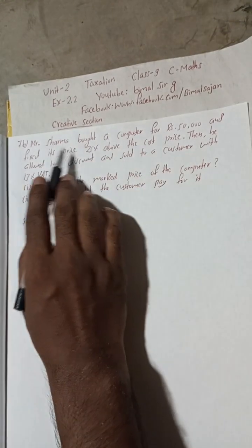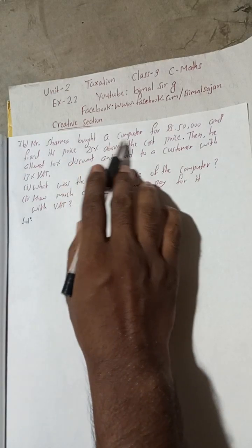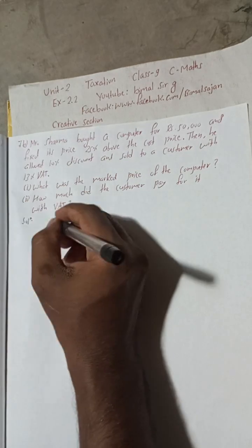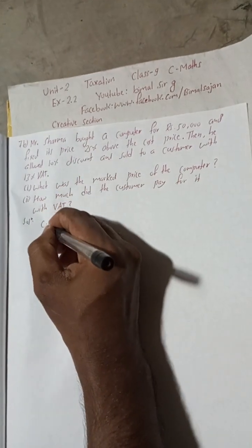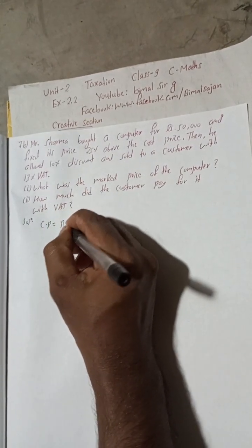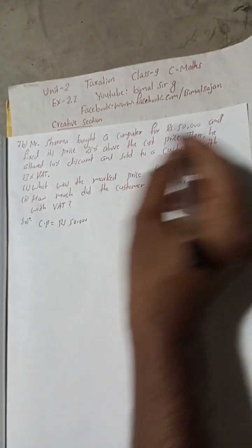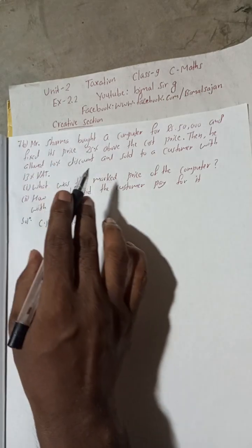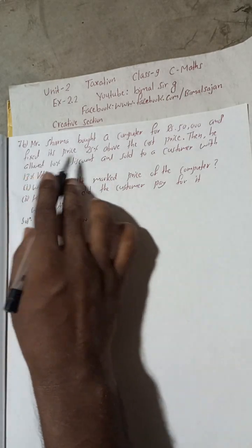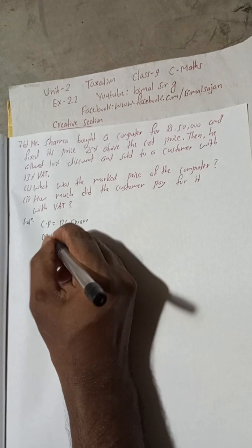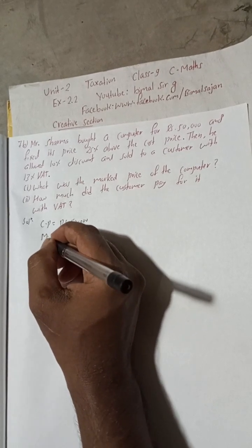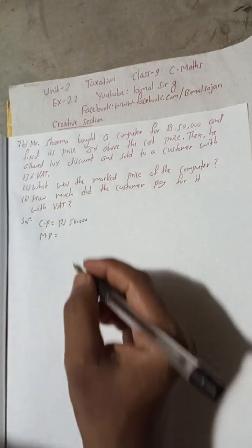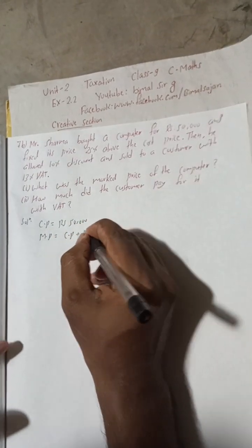Mr. Sarma bought a computer — 'bought' means he purchased it, so this is the cost price. Cost price is equal to Rs. 50,000 as given. 'Fixed its price above' means marked price. So the marked price is equal to CP plus a percentage above CP.